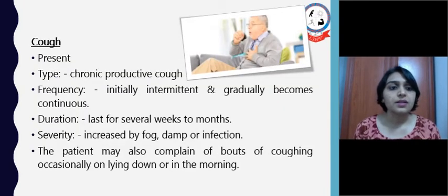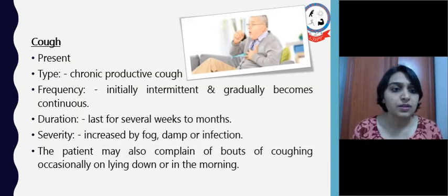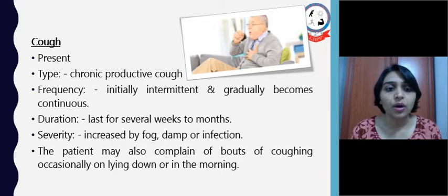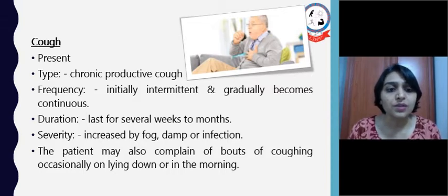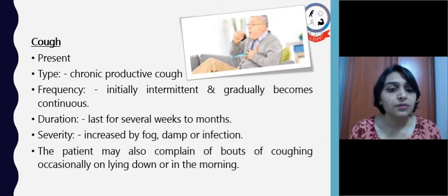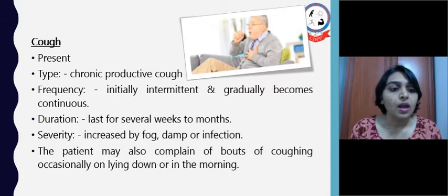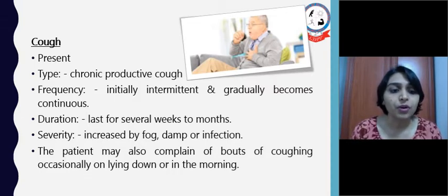Next is cough. The type is chronic productive cough. Frequency is initially intermittent and gradually becomes continuous. Duration lasts for several weeks to months. Severity is increased by fog, damp, or infectious weather. The patient may also complain of bouts of coughing occasionally when lying down or in the morning.